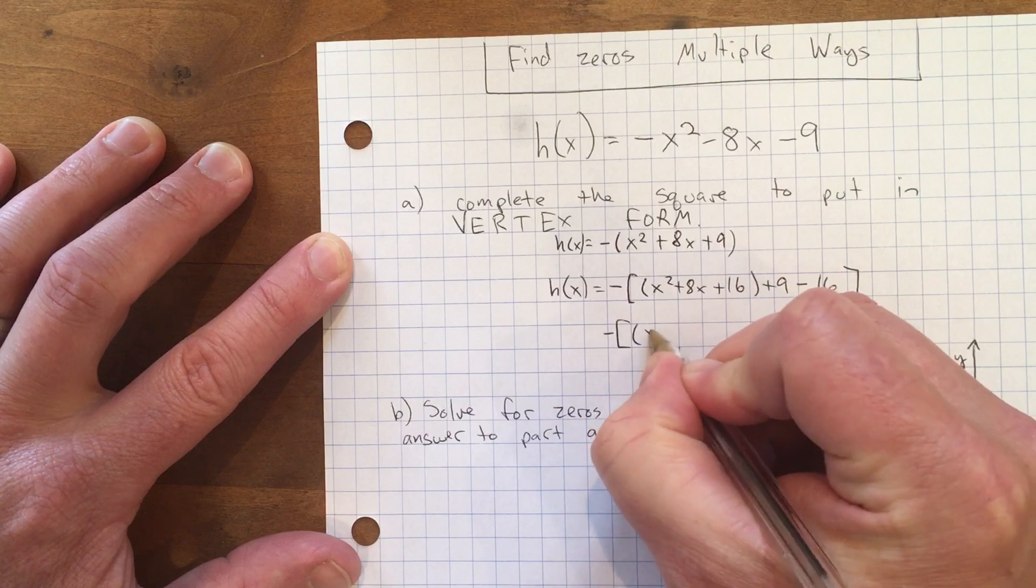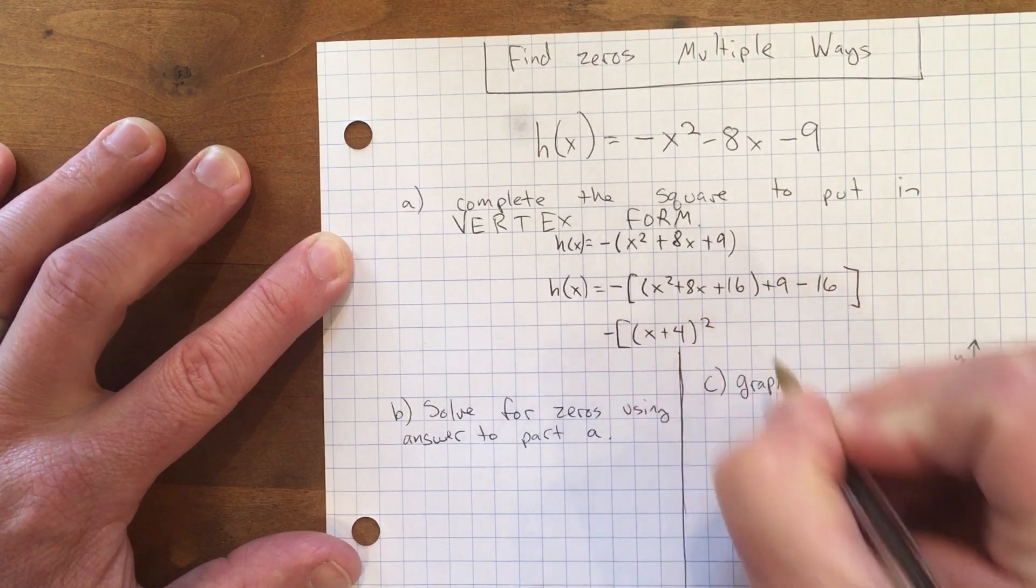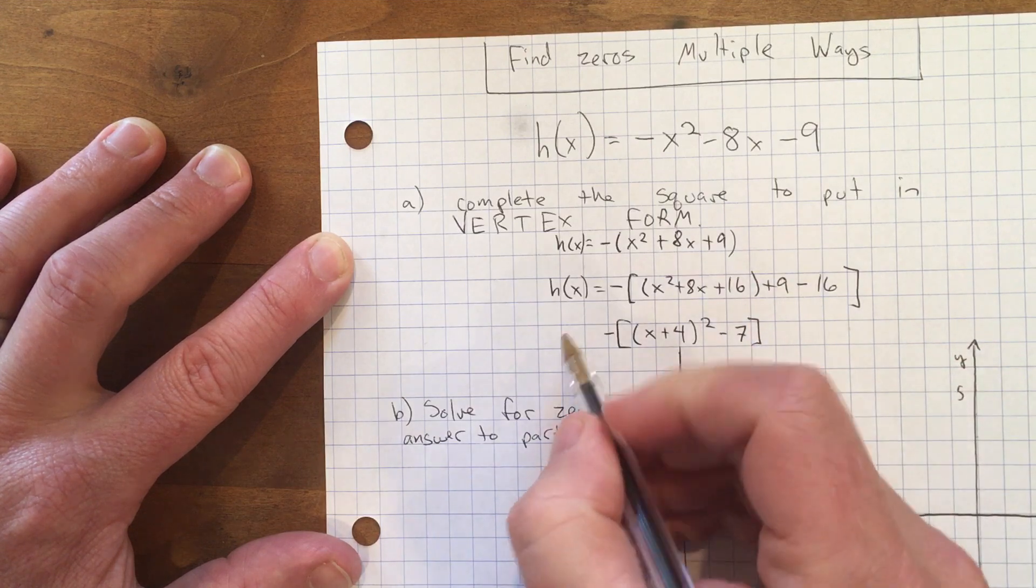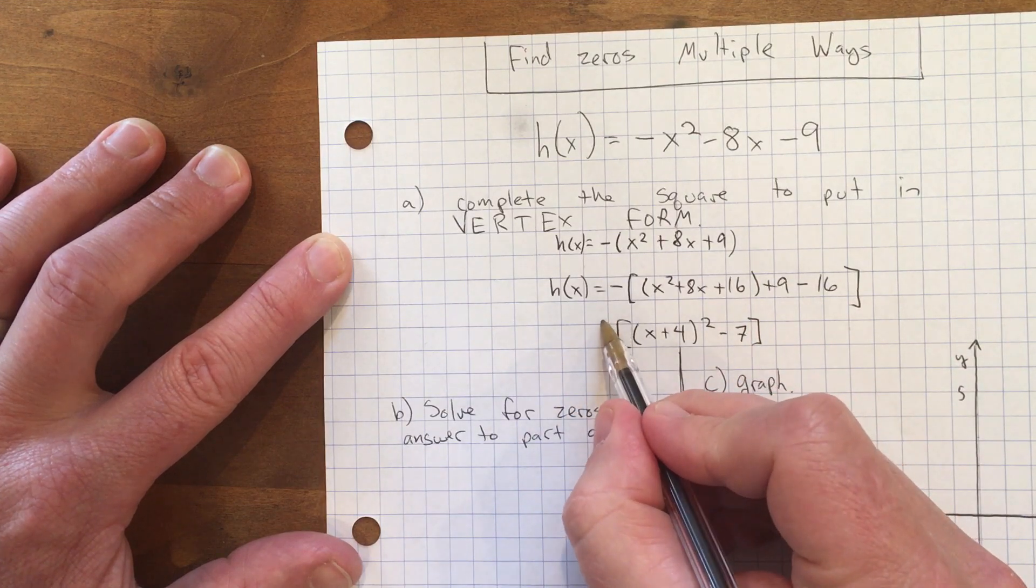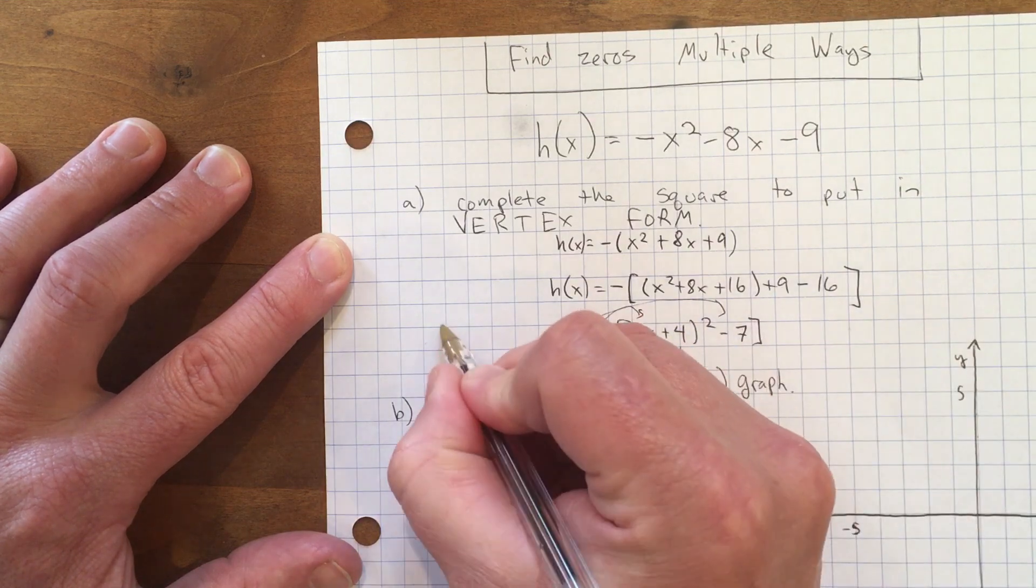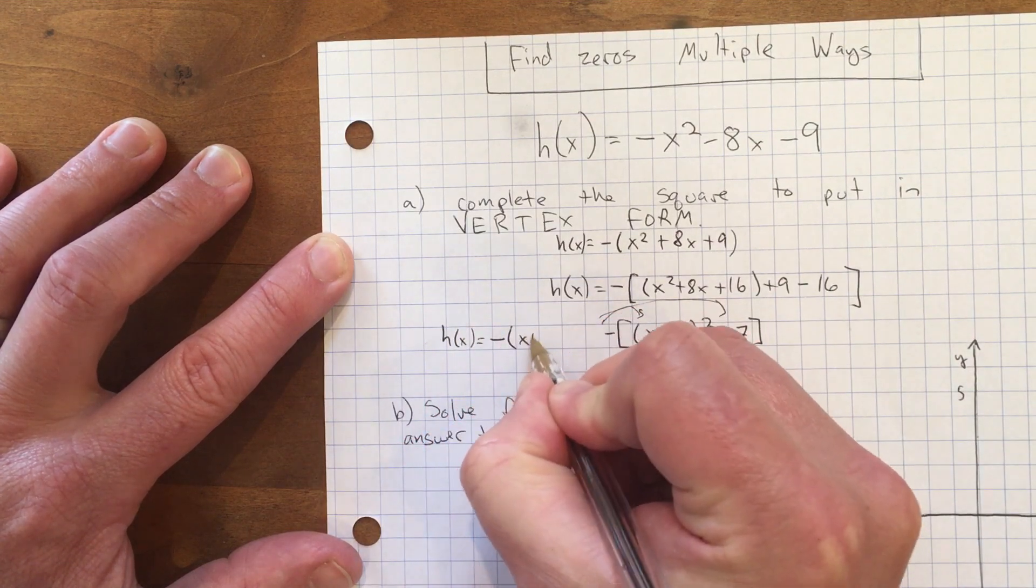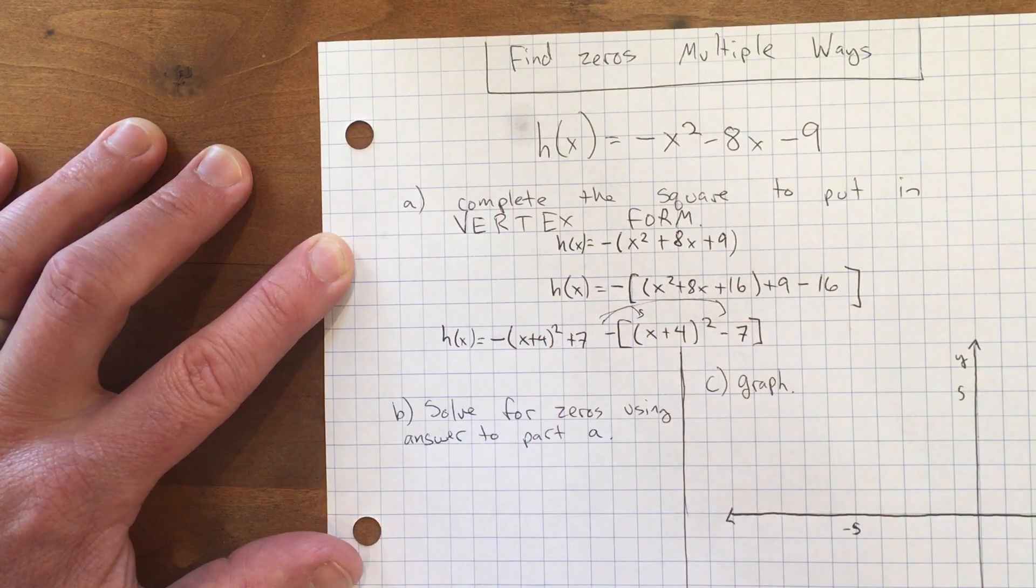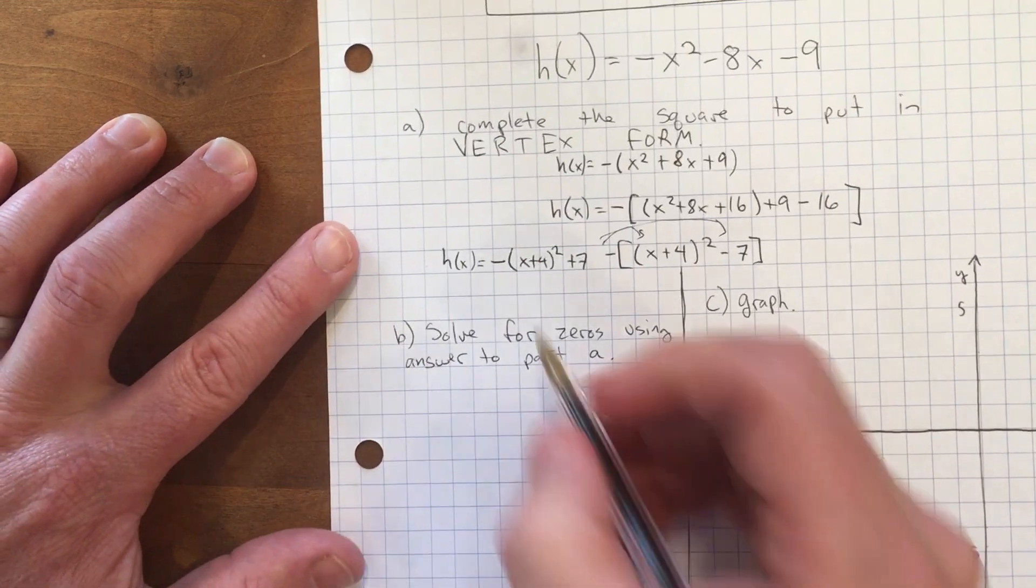Now I have a perfect square, so it's (x + 4)² and then 9 - 16 is -7. But that's not done - I have to redistribute that negative symbol into those two terms, so h(x) = -(x + 4)² + 7.